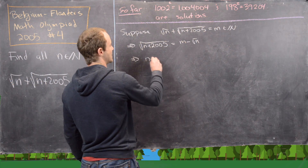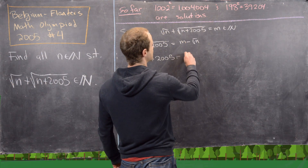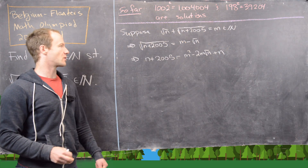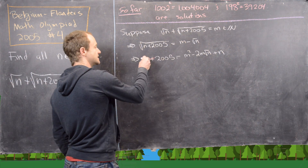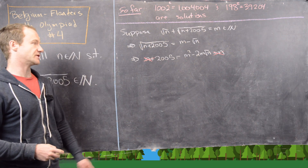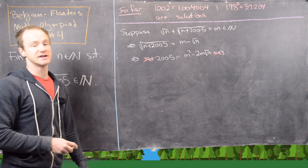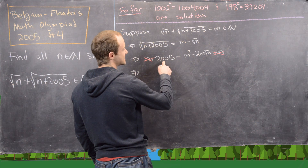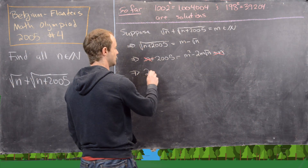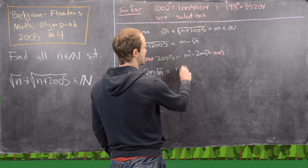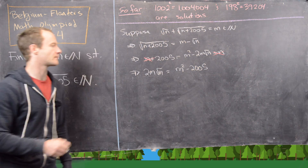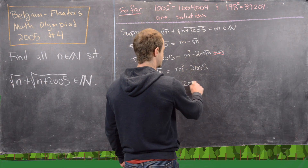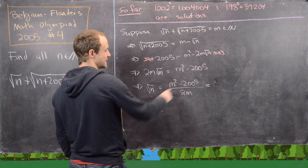Rearranging gives √(n + 2005) = m - √n. Squaring both sides: n + 2005 = m² - 2m√n + n. The n terms cancel on both sides. Rearranging to isolate √n gives 2m√n = m² - 2005, so √n = (m² - 2005) / (2m).